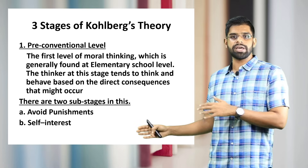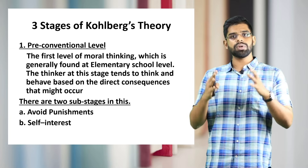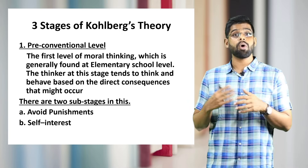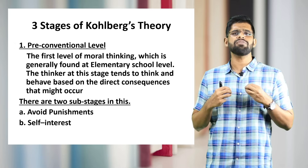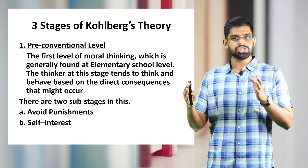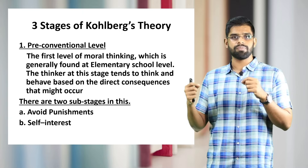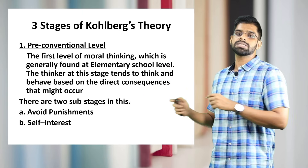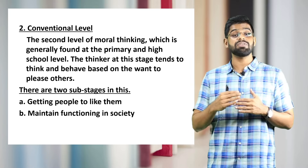This pre-conventional stage is divided into two sub-stages: avoid punishment and self-interest. Lawrence explains that during the pre-conventional stage everyone is concerned with two major things — first, how to avoid punishment from a particular act, and second, self-interest, meaning every individual and child will be opportunistic in nature.